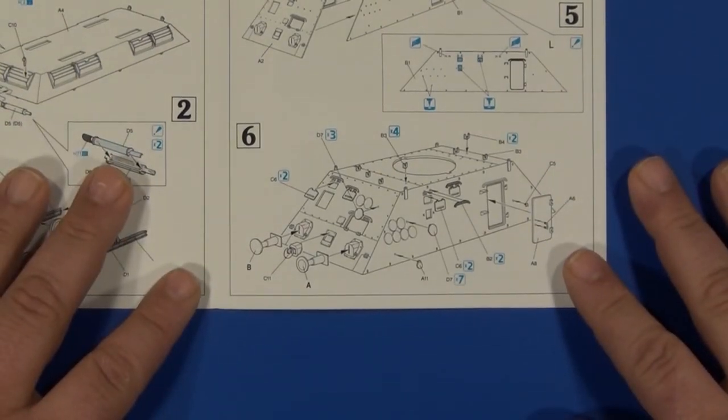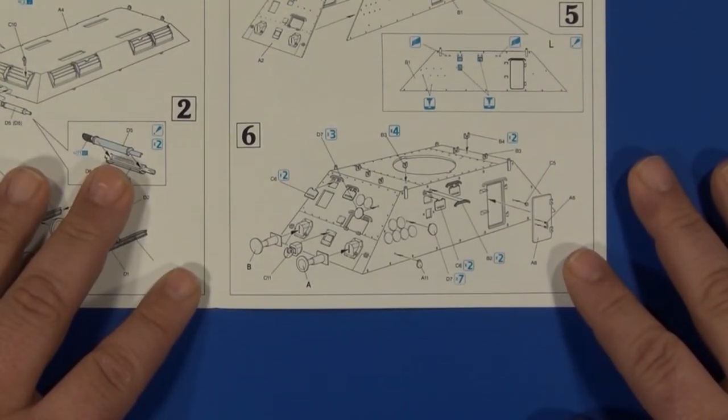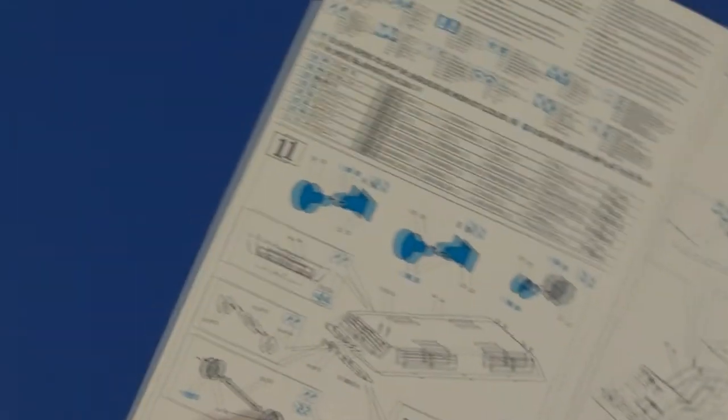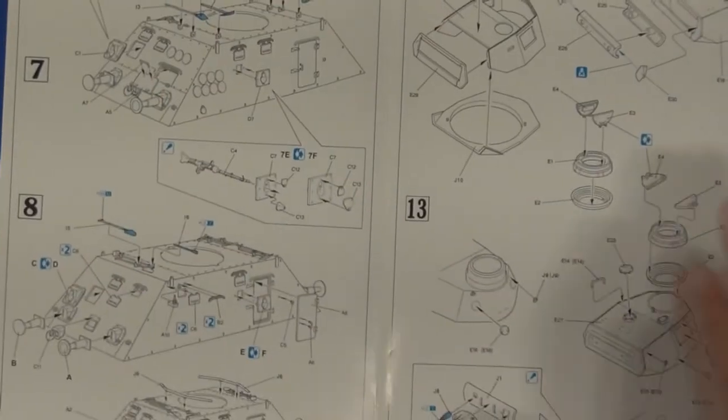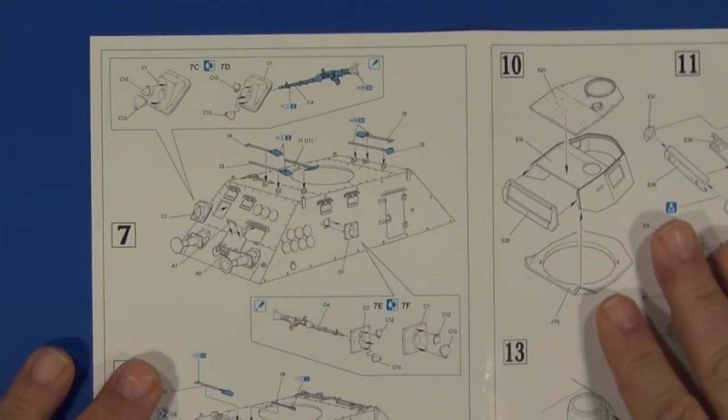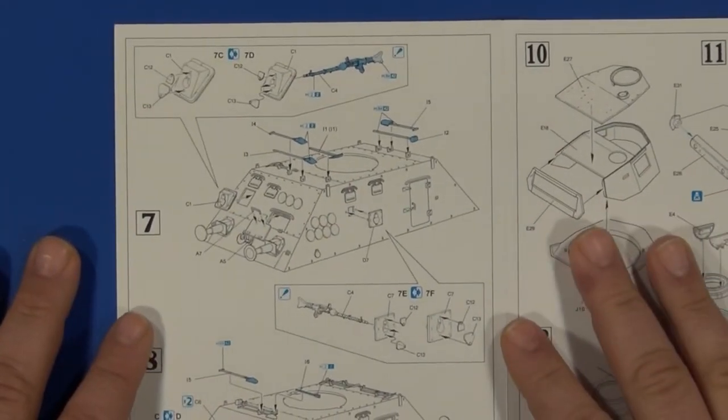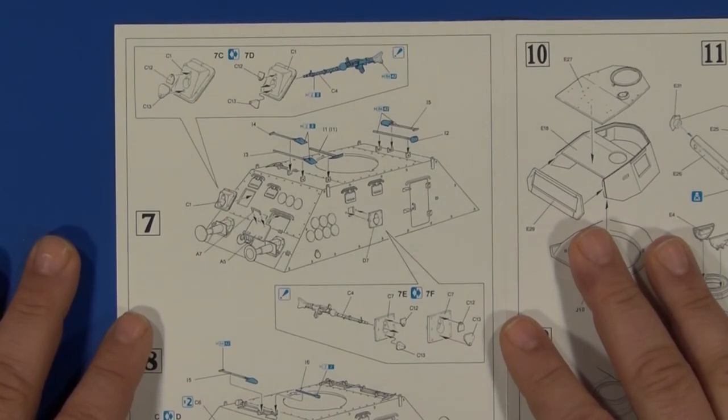Step six: left side upper plate and front plate details. Step seven: machine guns and tools.